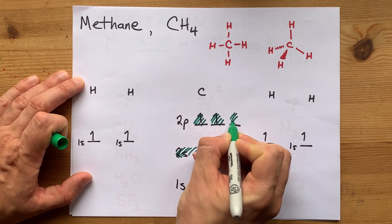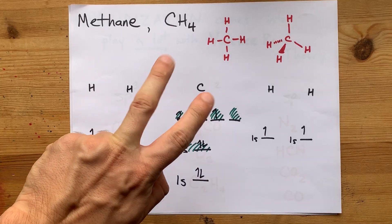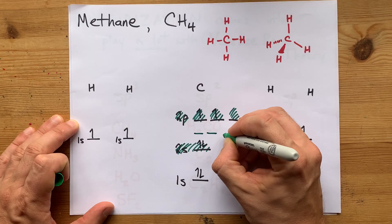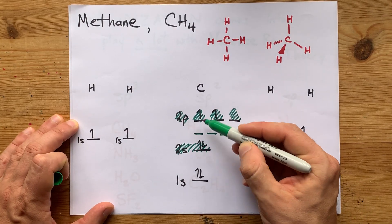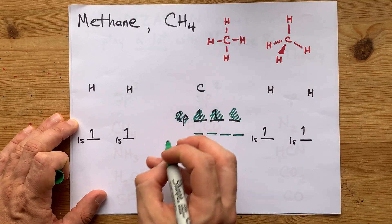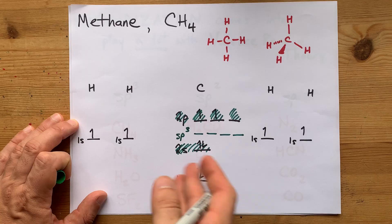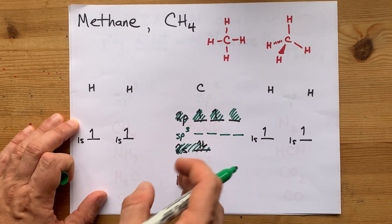And you hybridize them to form four atomic orbitals, all at the same energy level, somewhere in between the s's and the p's you're combining, and you're going to call them sp3 hybridized orbitals. You had to combine an s and three of the p's to do it.